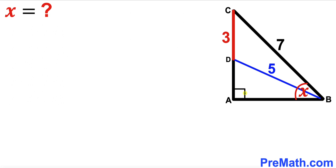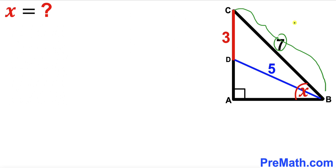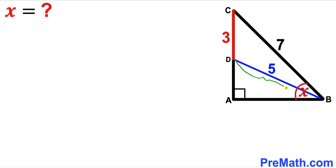Welcome to pre-math. In this video we have got this right triangle ABC as you can see in this diagram, along with this line segment BD, such that the hypotenuse BC is 7 units, segment CD is 3 units, and segment BD is 5 units. Furthermore, angle ABC is X, and our task is to find the value of angle X.